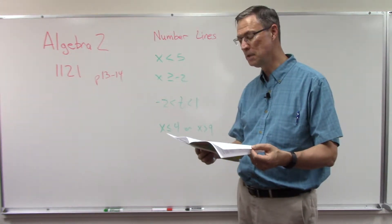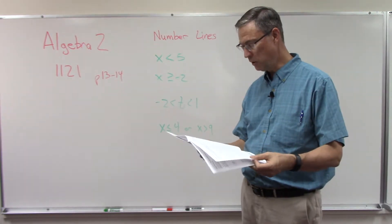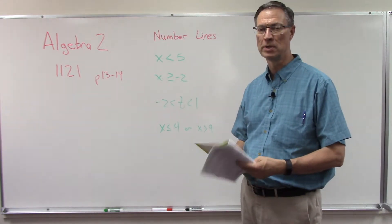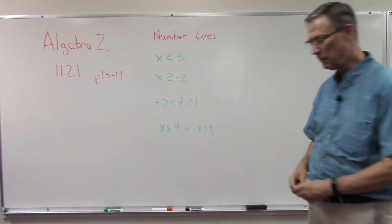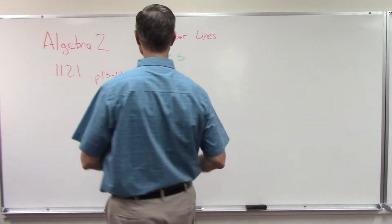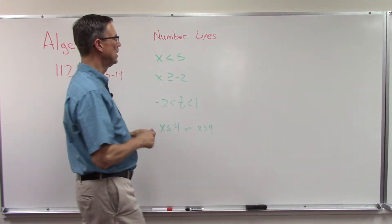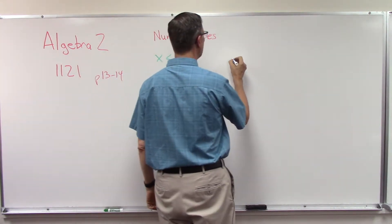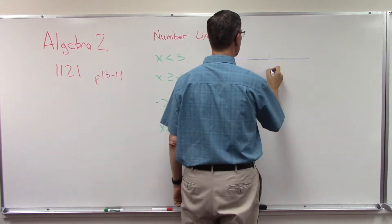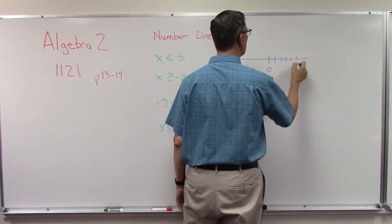Then they call it order on pages 13 and 14, and that basically just means determining if something is greater than or less than on a number line. So I'm going to draw a number line here and I'll just randomly put zero in the middle: one, two, three, four, five, and negative one, two, three, four, five.